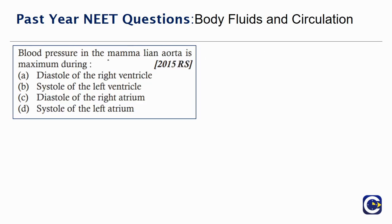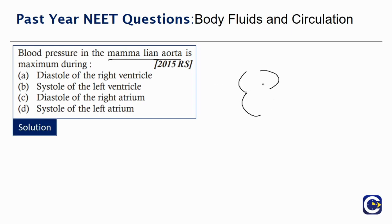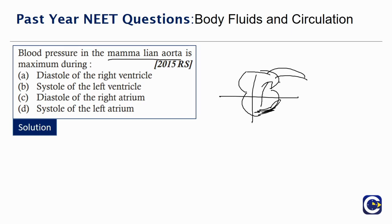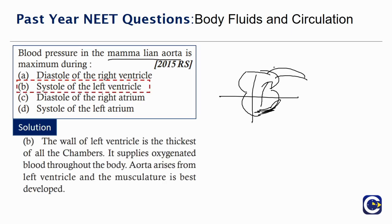Blood pressure in the mammalian aorta is maximum during: diastole of the right ventricle, systole of the left ventricle, diastole of the right atrium, or systole of the left atrium. The aorta arises from the left ventricle, and the major contributor to blood flow into the aorta is the systole of the left ventricle only. So the answer is systole of the left ventricle.